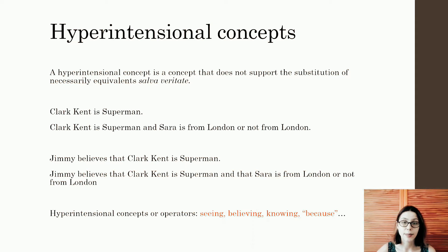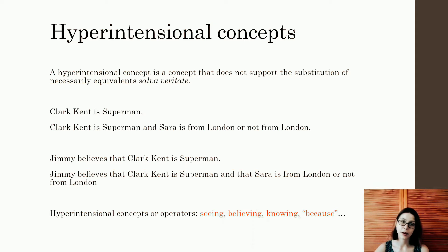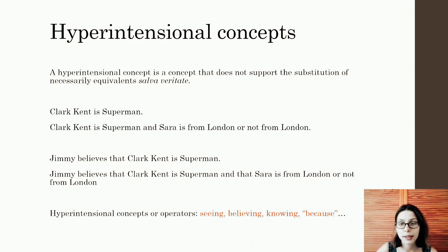Consider the sentence: 'Jimmy believes that Clark Kent is Superman' versus 'Jimmy believes that Clark Kent is Superman and Sarah is from London or not from London.' These two sentences are clearly not intersubstitutable. This is because Jimmy may not have any belief regarding Sarah, and so he does not have a belief that Sarah is from London or not from London.